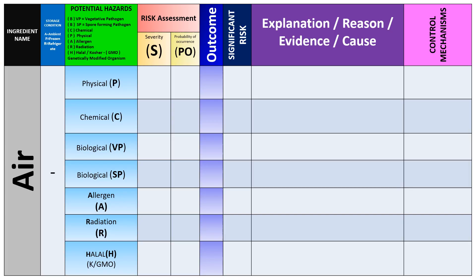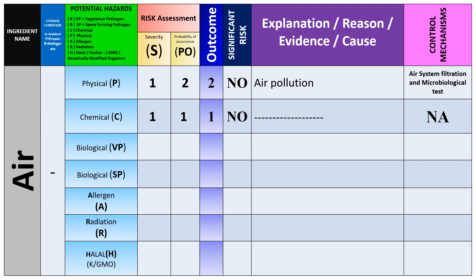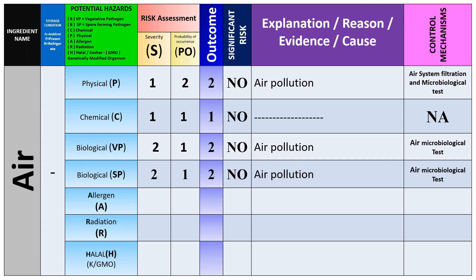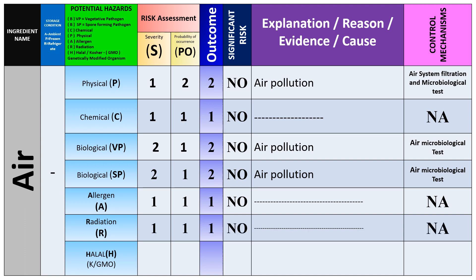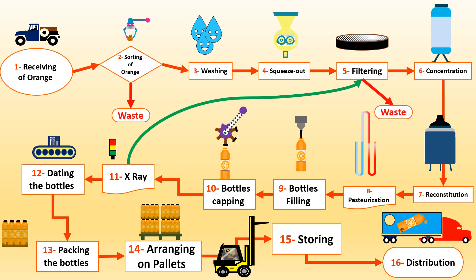For the air: physical hazard arises from air pollution; the control measure is air system filtration and microbiology testing of the air. Chemical hazard is not significant. Biological hazard is not significant but may be due to air pollution, so a control mechanism must be in place. Biological spore-forming follows the same cause. Allergen, radiation, and halal are all not applicable for air. This completes the raw materials: orange, water, and air.